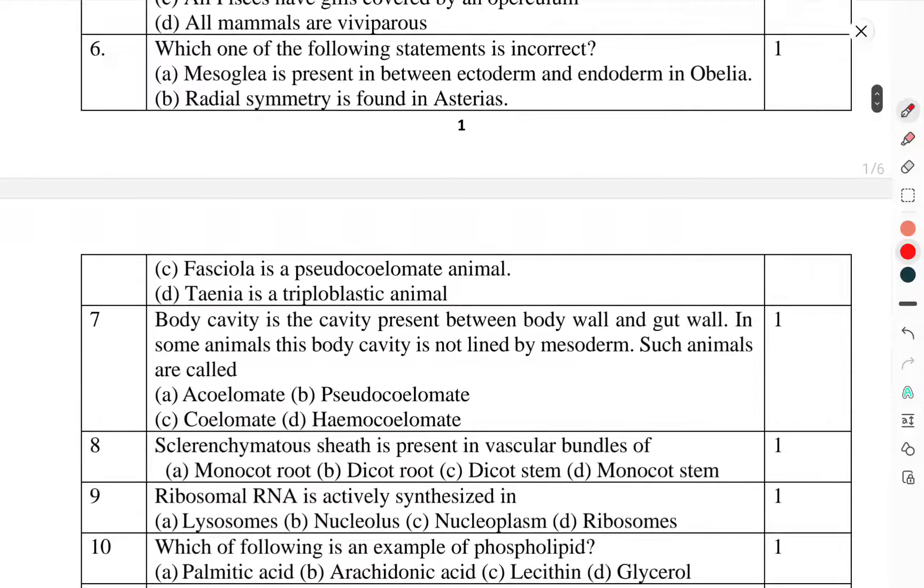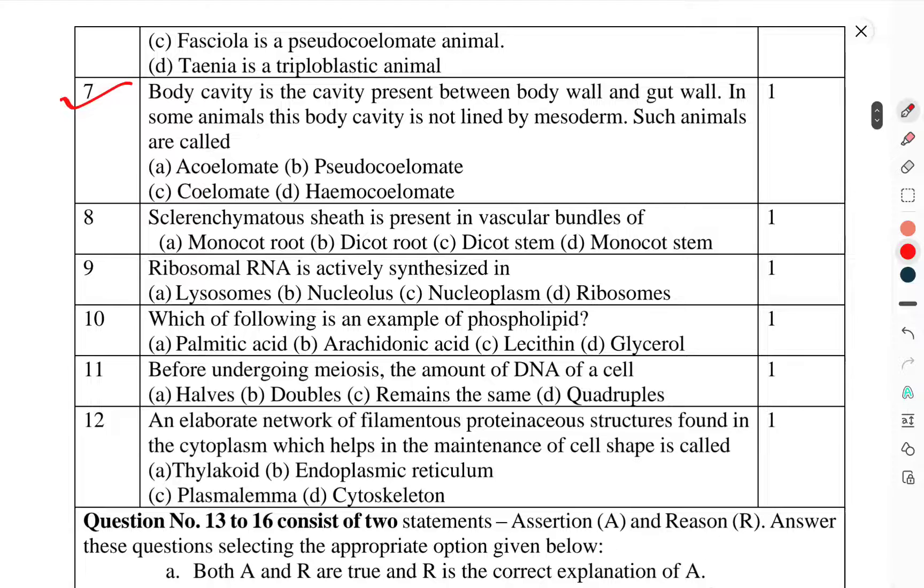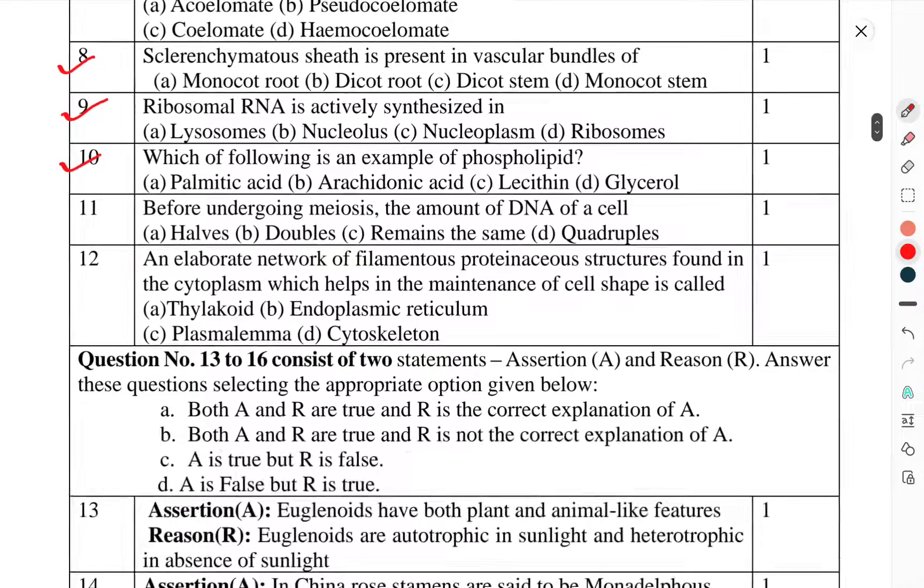Question 6: Which one of the following statements is incorrect? Question 7: Body cavity is the cavity present between the body wall and the gut wall. In some animals, this body cavity is not lined by mesoderm. Such animals are called? Question 8: Sclerenchymatous sheath is present in vascular bundles of? Question 9: Ribosomal RNA is actively synthesized in? Question 10: Which of the following is an example of a phospholipid? Question 11: Before undergoing meiosis, the amount of DNA in a cell? Question 12: An elaborate network of filamentous proteinaceous structures found in the cytoplasm which helps in the maintenance of cell shape is called?